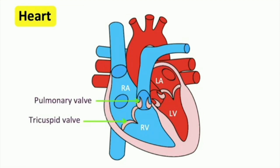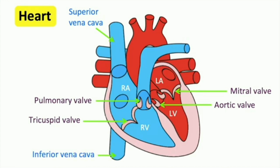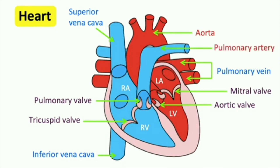The pulmonary and tricuspid valves are on the right, and the mitral and aortic valves are on the left. The superior and inferior vena cava. The pulmonary vein carries oxygenated blood from the lungs to the heart. The aorta is the main artery that carries oxygenated blood away from the heart to the rest of the body. The pulmonary artery carries deoxygenated blood from the heart to the lungs.